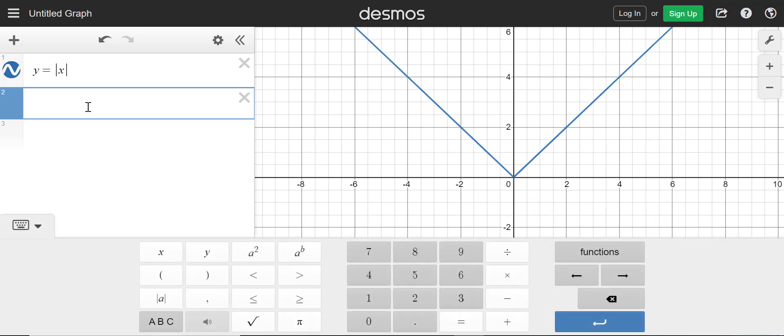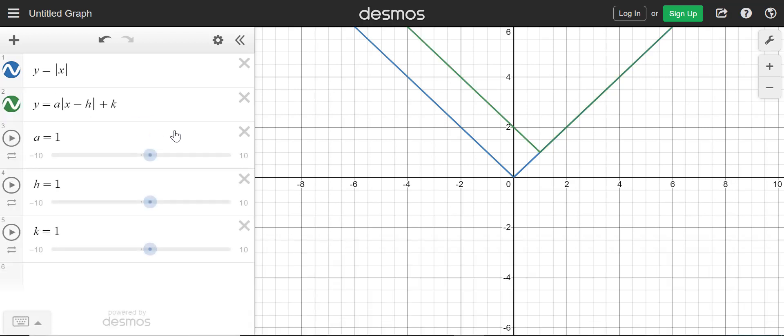Now we're going to do transformations of it. So we're going to type in y equals and we're going to type in some variables here. So I'm going to type in a absolute value x minus h inside and then plus k on the outside. And then I'm going to add sliders. The sliders allow you to experiment to see how these variables would change everything.